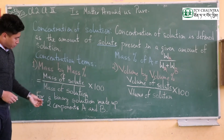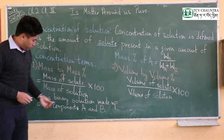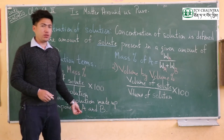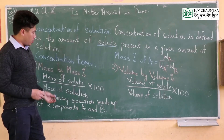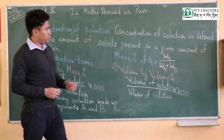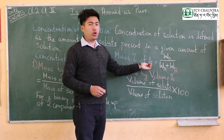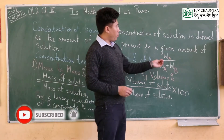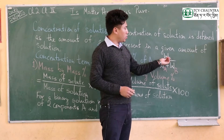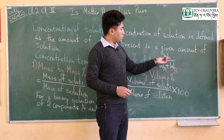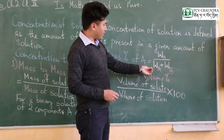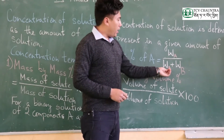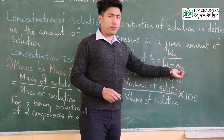For a binary solution made up of two components A and B — where A is the solute and B is the solvent — the mass percentage of A (solute) is calculated. The formula uses W_A divided by W_A plus W_B, where W_A is the mass of solute and W_B is the mass of solvent.